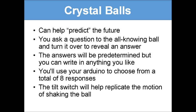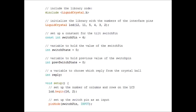Alright then let's have a look at what a crystal ball actually is. A crystal ball can help predict the future. You ask a question to the all-knowing ball and turn it over to reveal an answer. The answers will be predetermined but you can write in anything you like. You'll use your Arduino to choose from a total of eight responses. The tilt switch will help replicate the motion of shaking the ball.